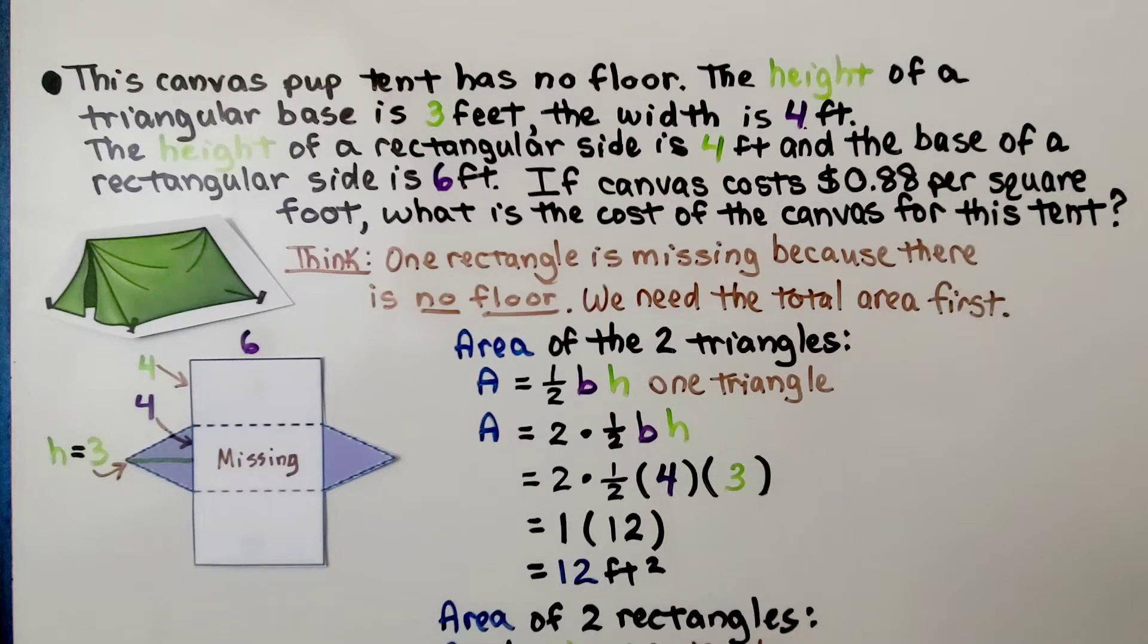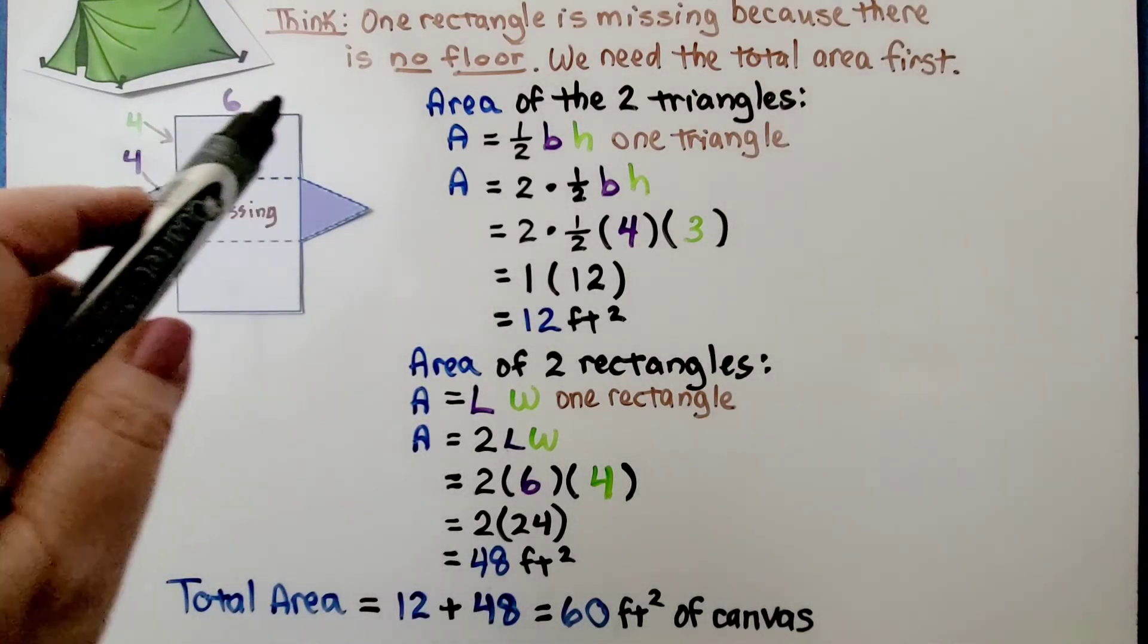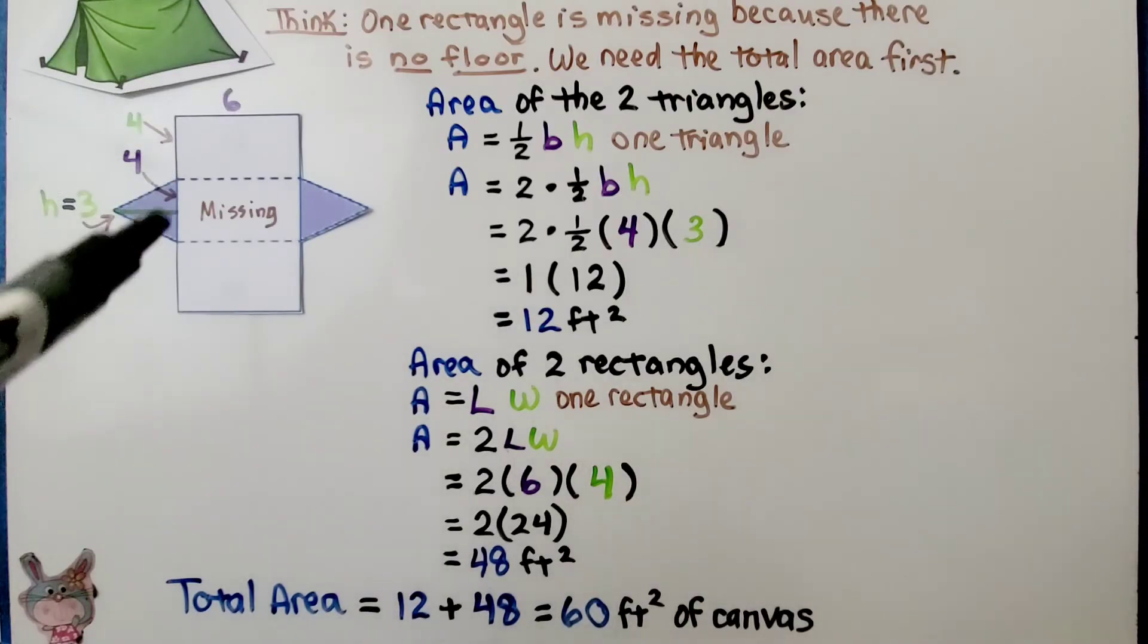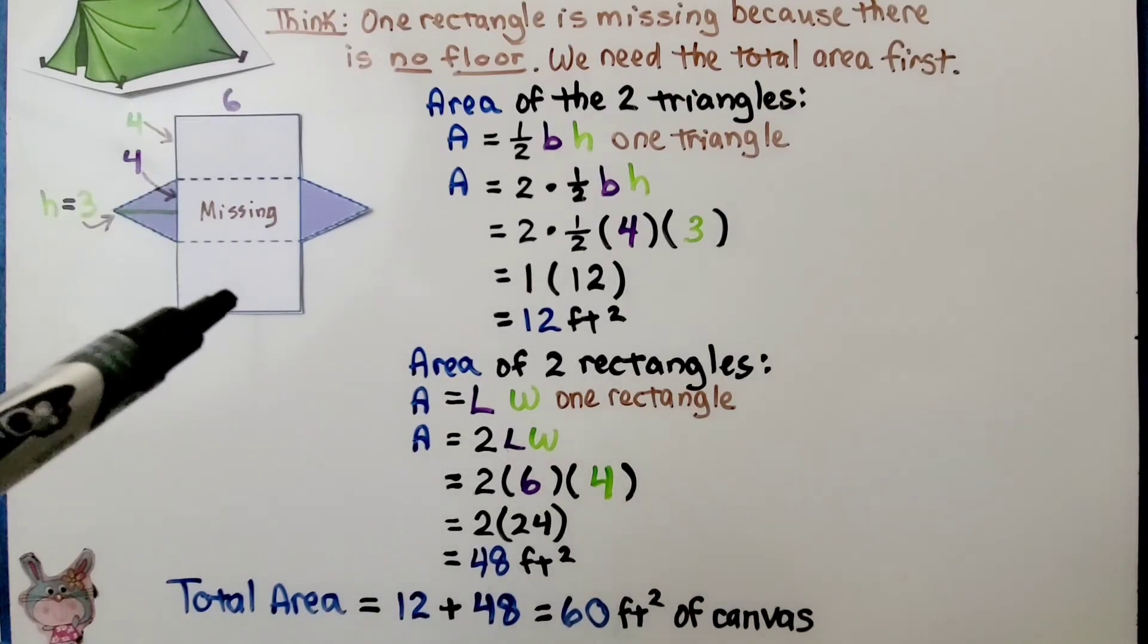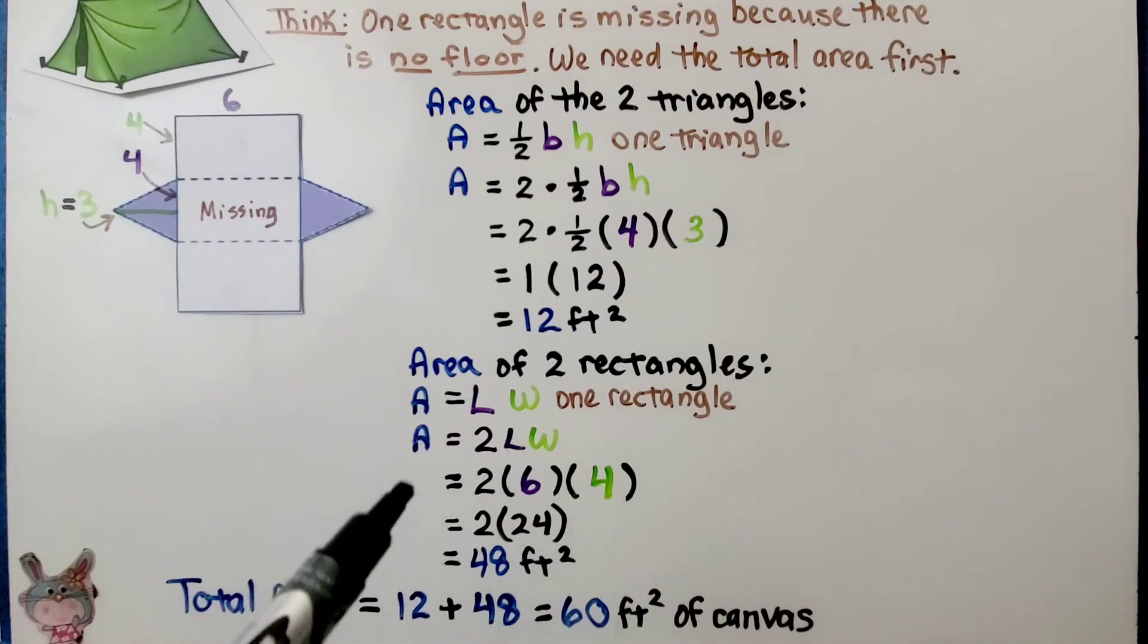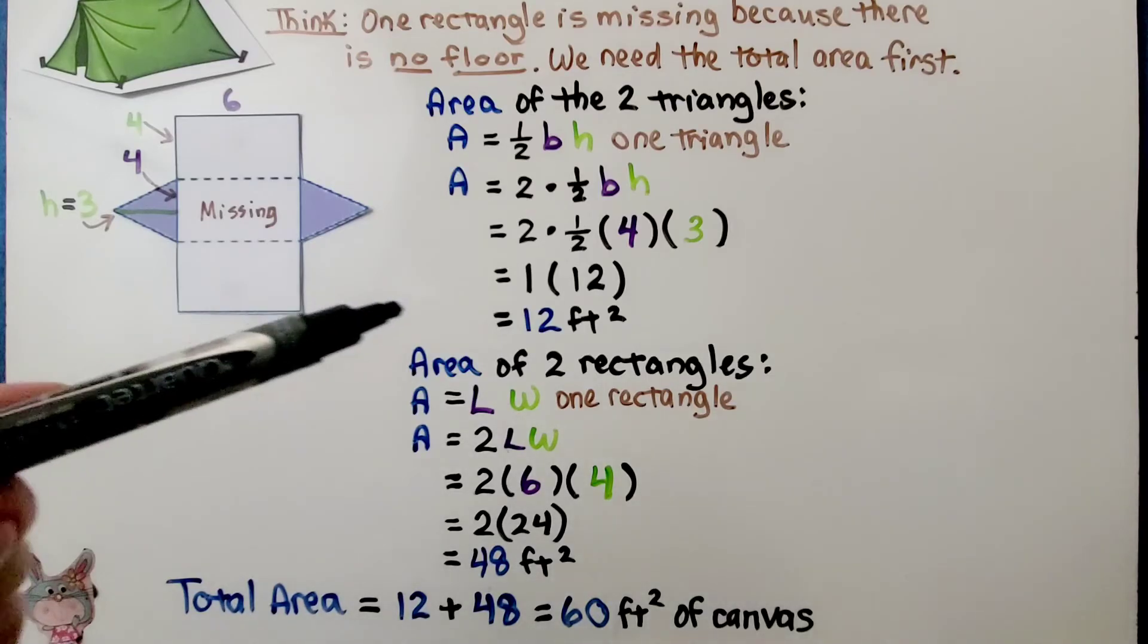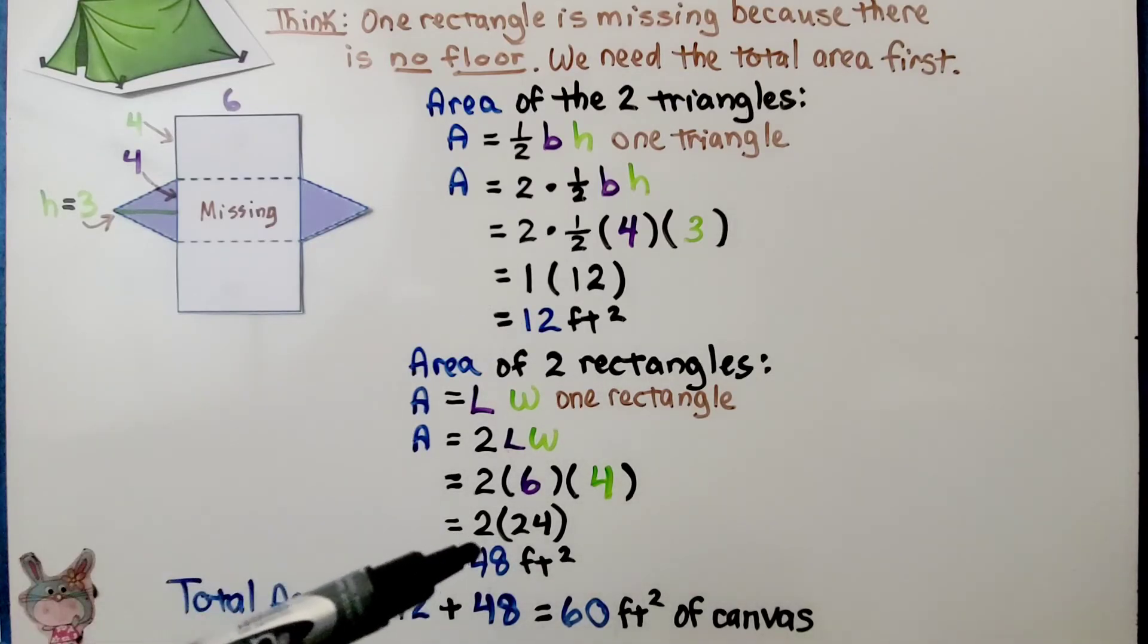Now we need to find the area of the two rectangles. We know that one of the sides of the rectangle is 6 feet, and this is 4 feet, and because this one's missing, we only have two rectangles. So the area of the two rectangles, one would be length times width. We have two of them, so we're going to do 2 times length times width. We have 2 times 6 times 4, which is 2 times 24, and that gives us 48 feet squared. Now we find the total area by adding them. We had 12 and 48. That's equal to 60 feet squared of canvas.